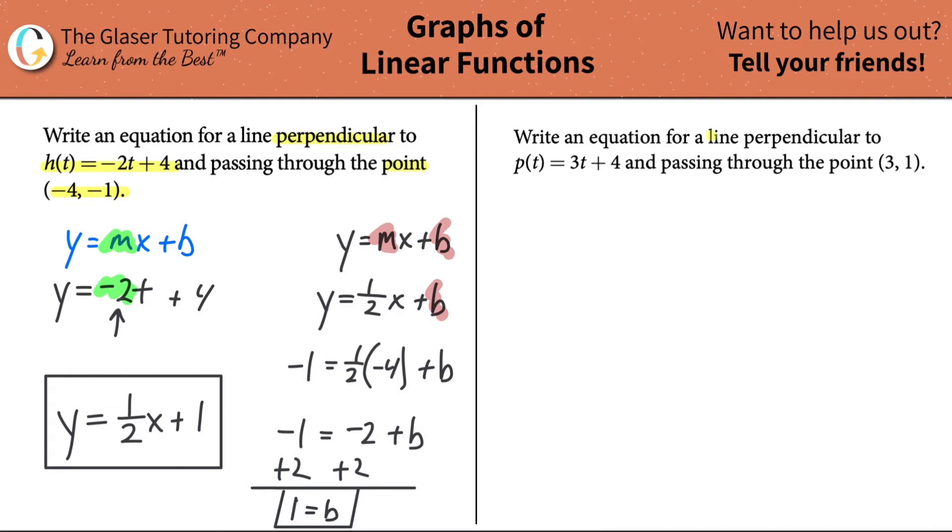Write an equation for a line perpendicular, opposite reciprocal slopes, to the equation p(t) = 3t + 4 and passing through the point (3, 1). Let's write it with y instead, so it's going to be y = 3t + 4.